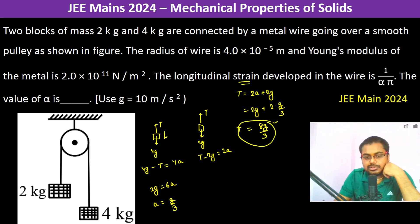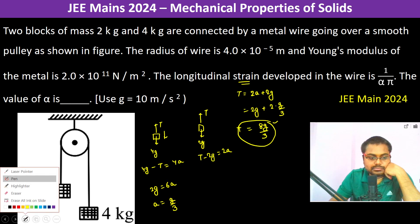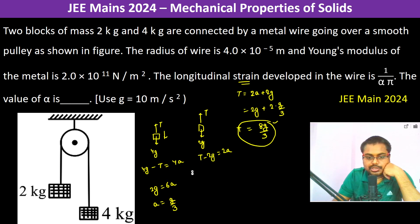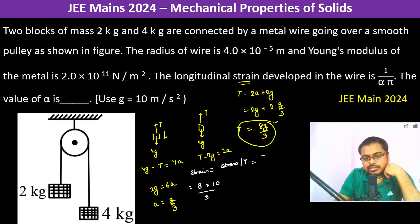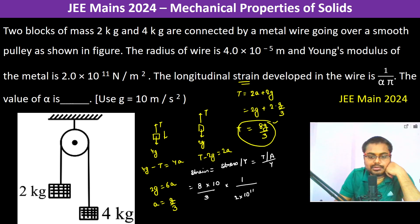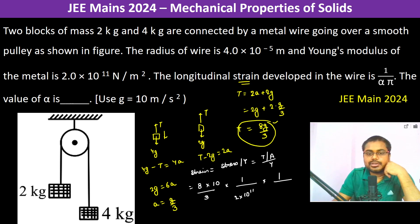Strain is equal to stress divided by Y. Stress is T divided by A. So strain equals (8g into 10) divided by 3, times 1 over Y, which is 2 into 10 to the power 11, times 1 by A.